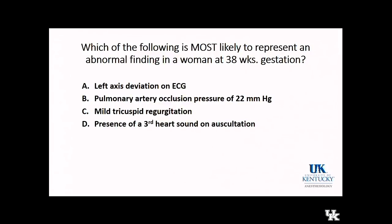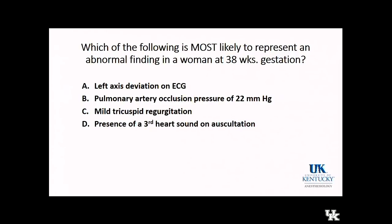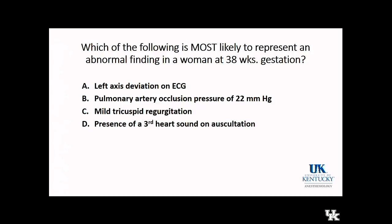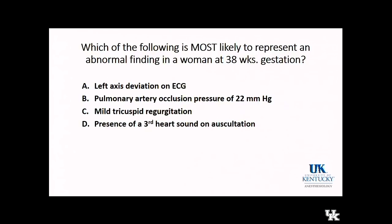Another cardiac question: which of the following is most likely to represent an abnormal finding in a woman at 38 weeks gestation? Is it left axis deviation on her EKG, PA pressures of 22 mmHg, mild tricuspid regurgitation, or a third heart sound? The correct answer is that elevated PA pressure is abnormal. All the other changes can occur as a result of the physiologic changes of pregnancy.